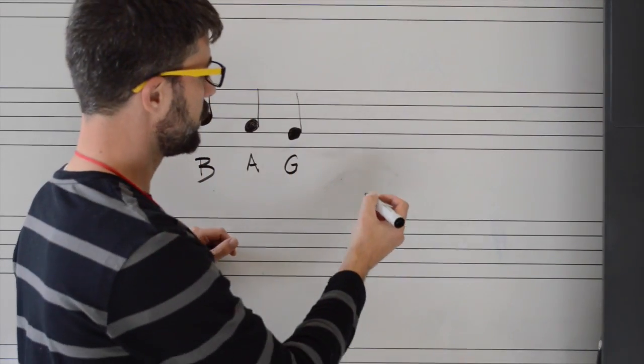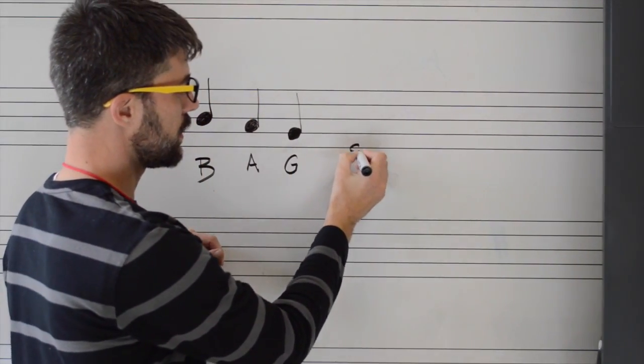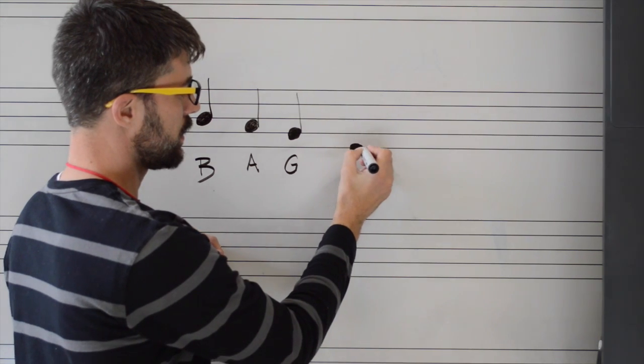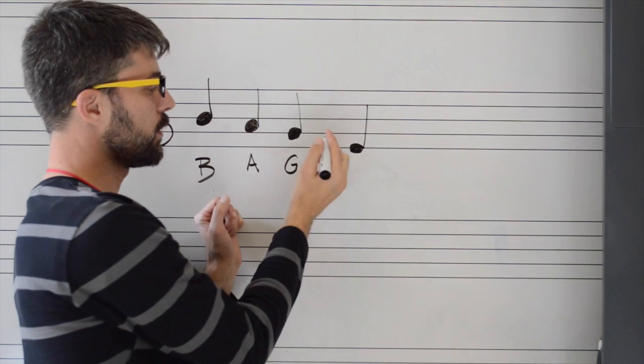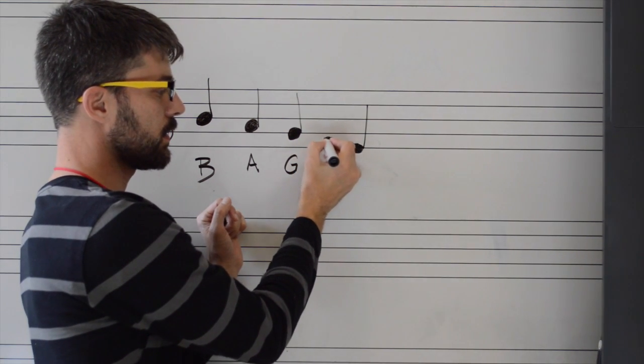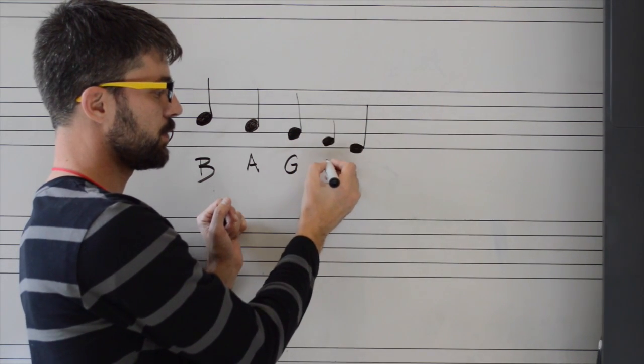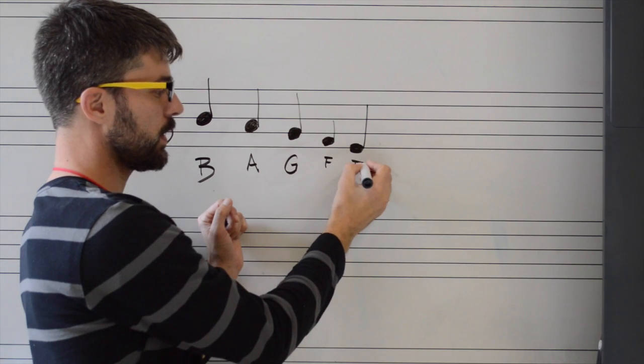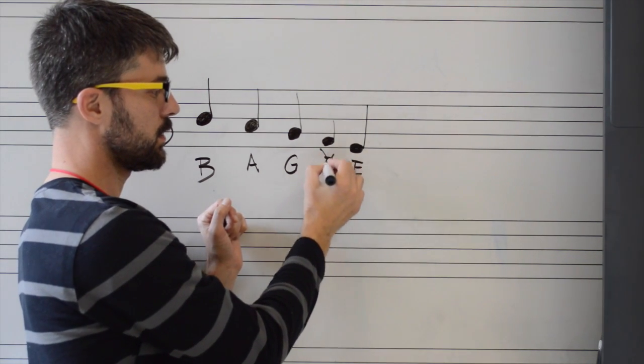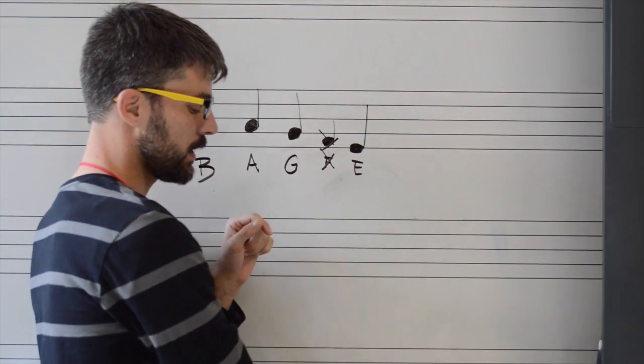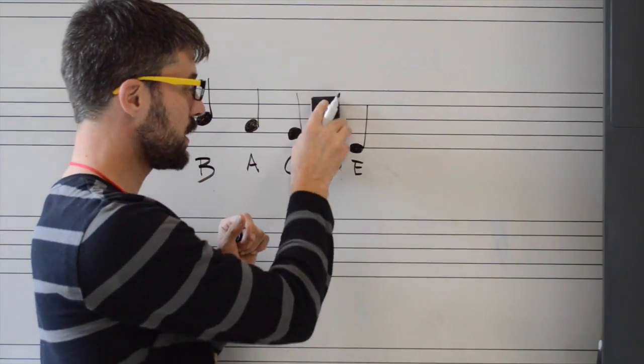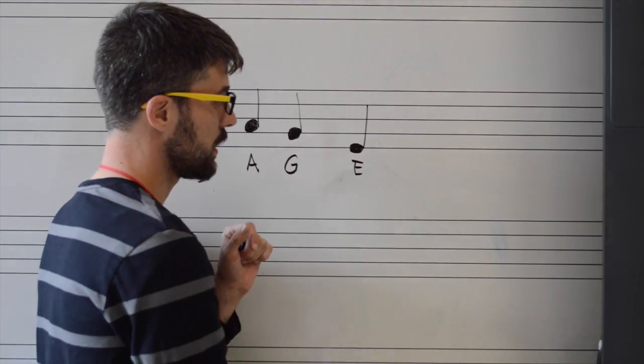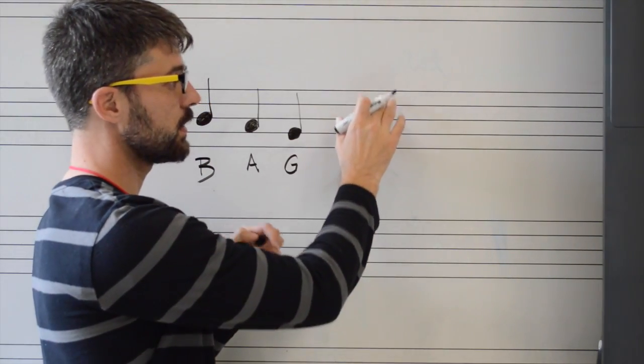We are going to learn the note E, which is on the first line. So you can see that we are skipping a note here. We know that there is a note here, and this would be an F, but we are going to skip it for right now. We are going to go ahead and go down to this note on the first line, the note E, as in every good boy does fine.